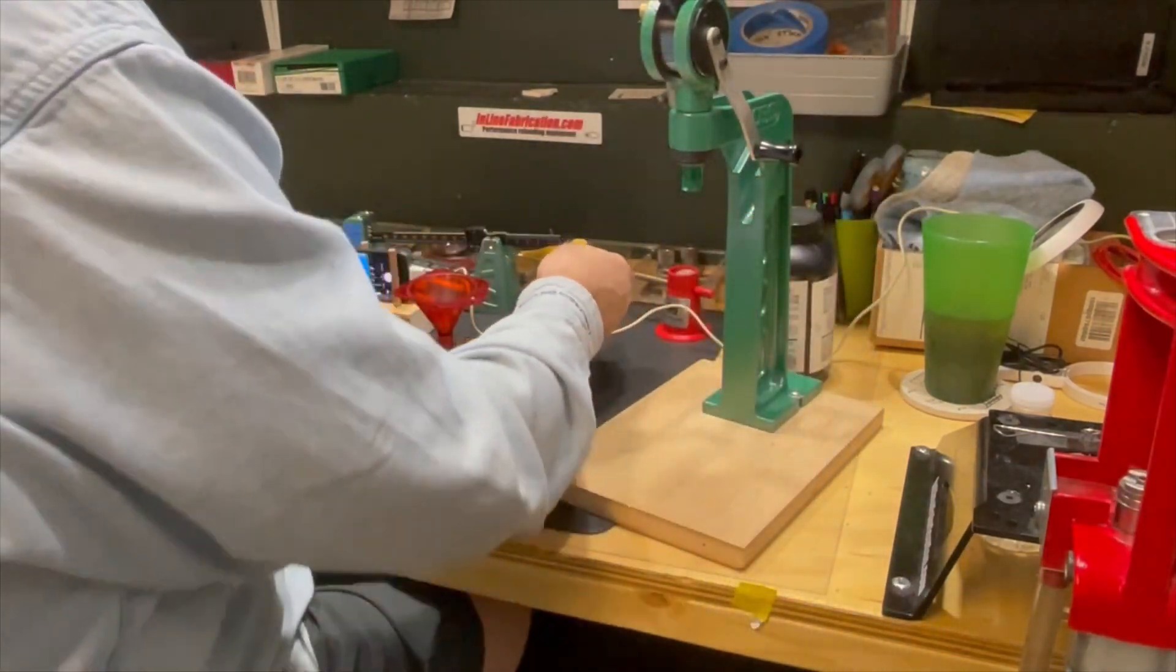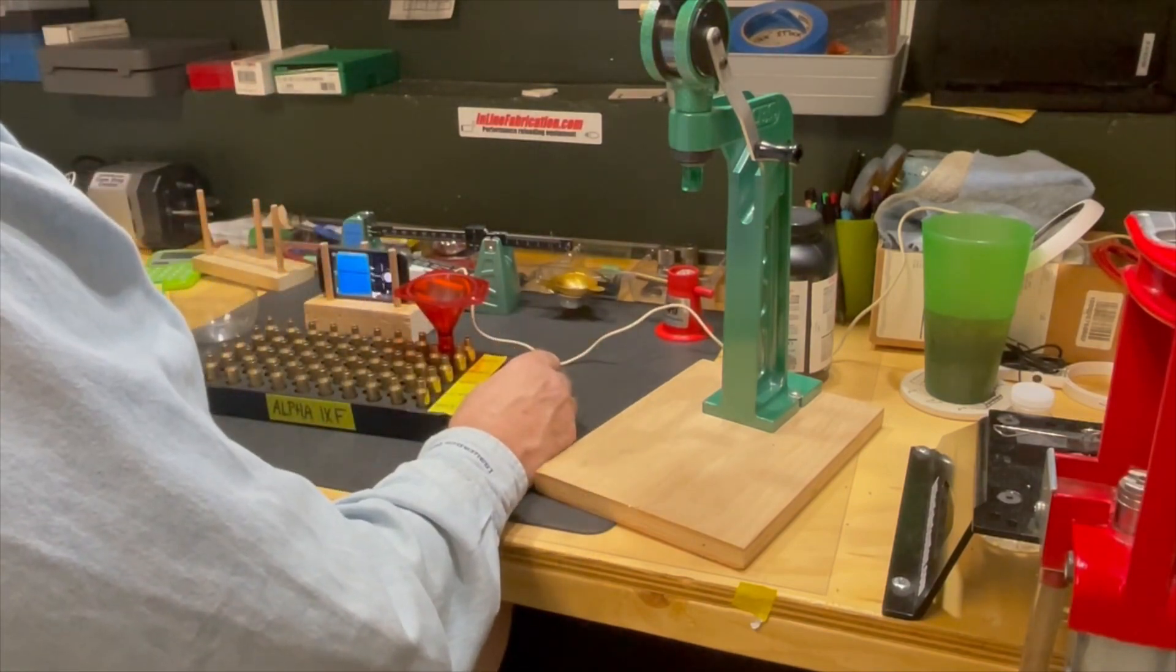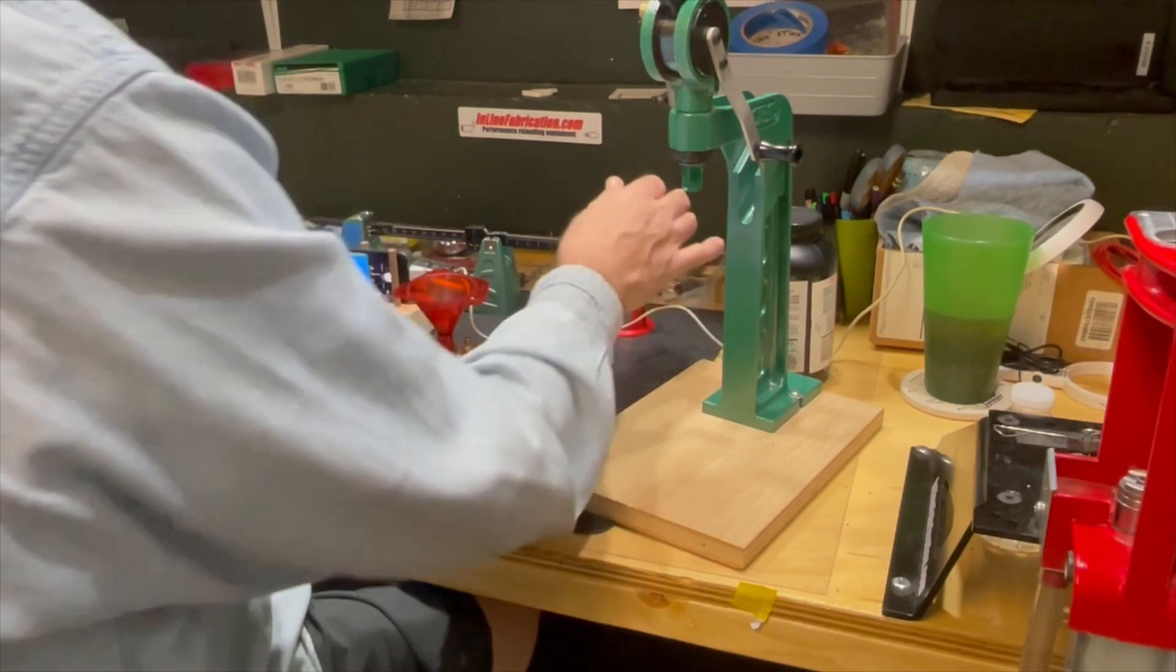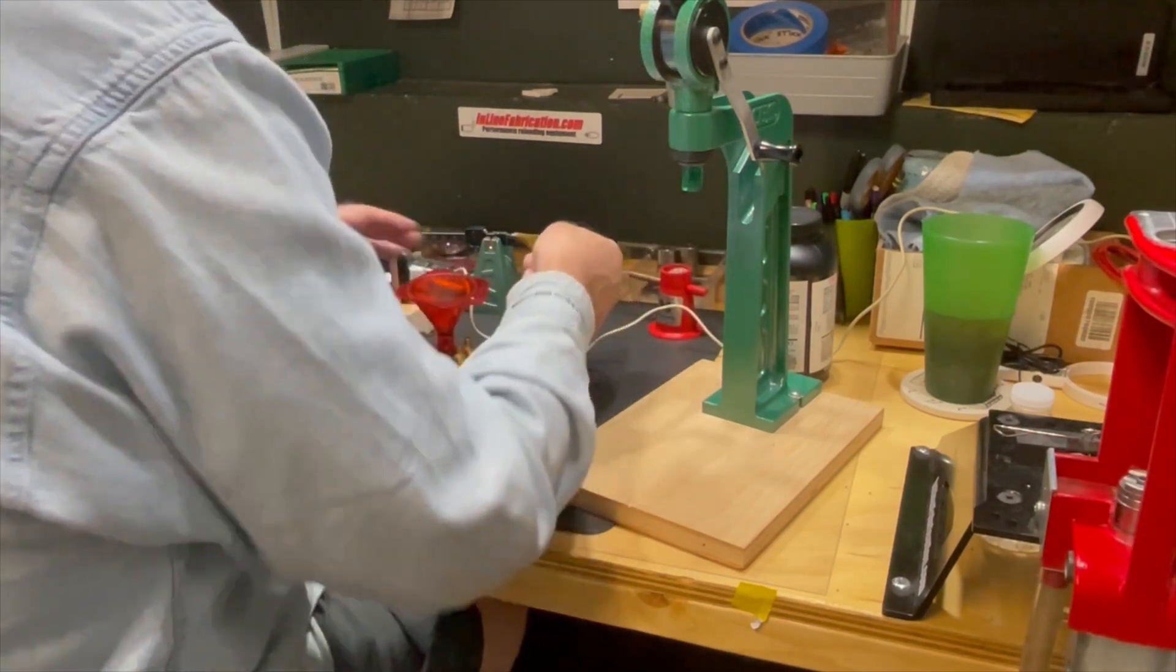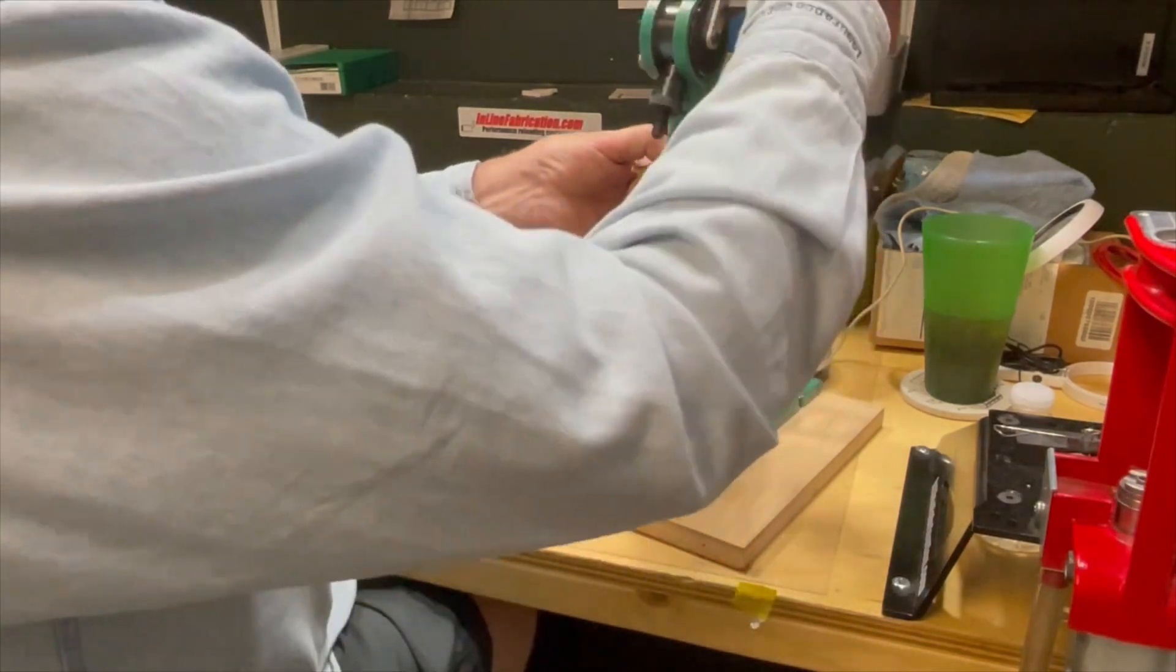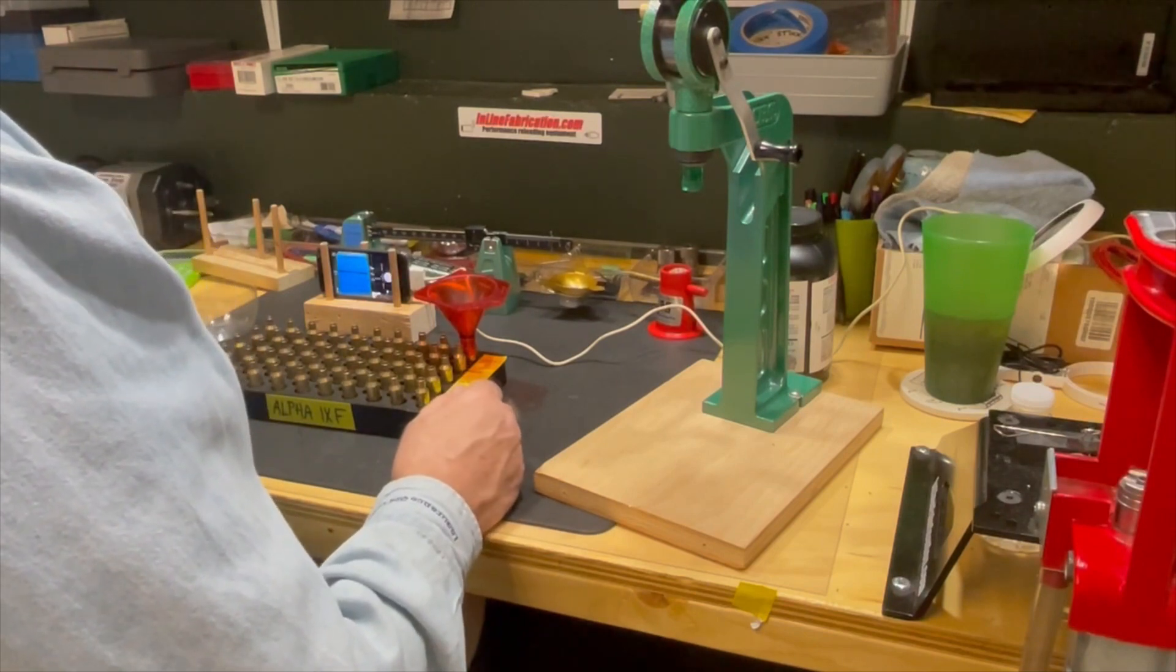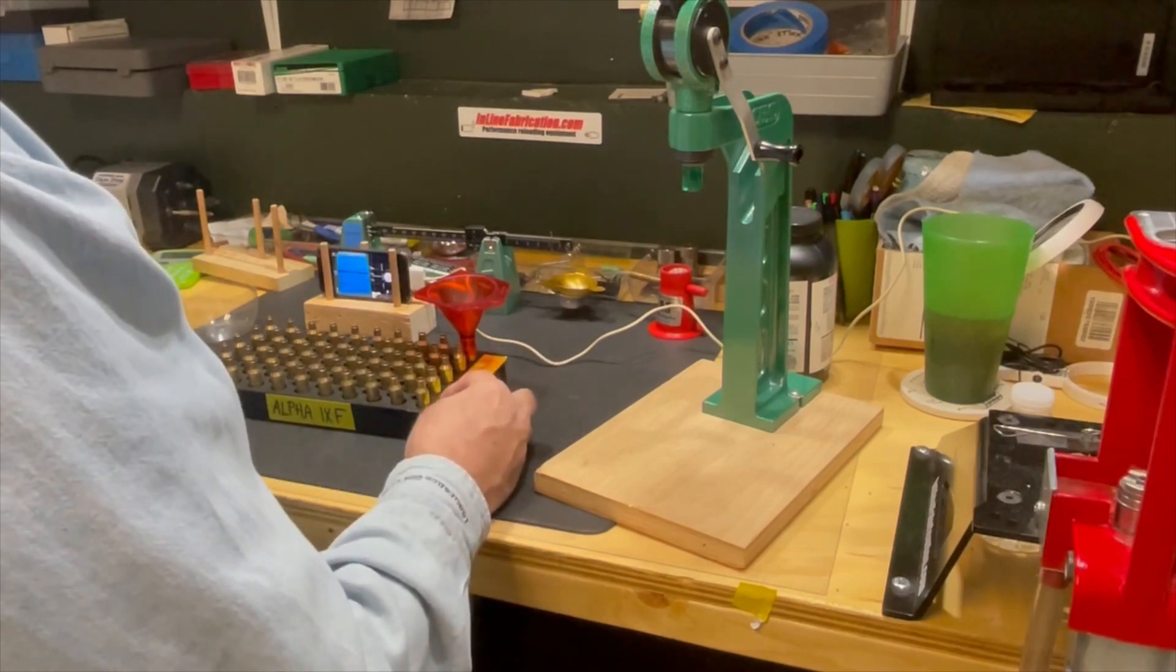So we drop the charge, we throw a charge into the tray, we weigh it out. This one's just a little on the light side so we use the trickler and bring it up to where it's exactly 40.7, drop the charge, move the funnel, and repeat. We're going to do this for all 50 cases. They're all going to be charged at 40.7 grains. The only difference in this load is going to be the primers.